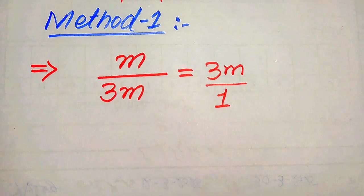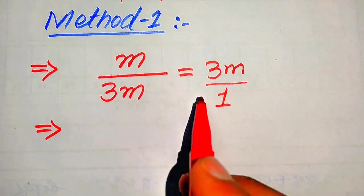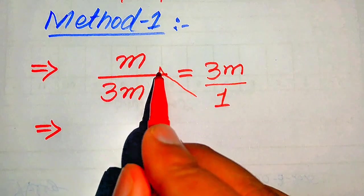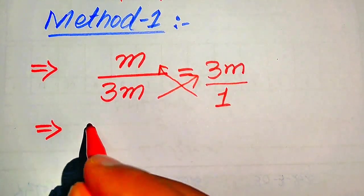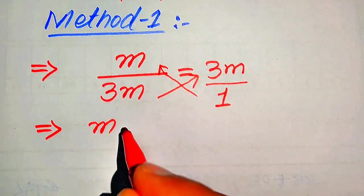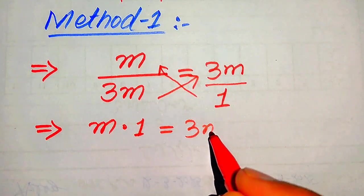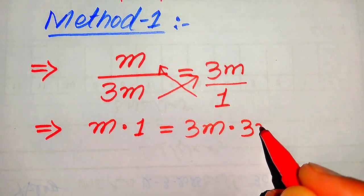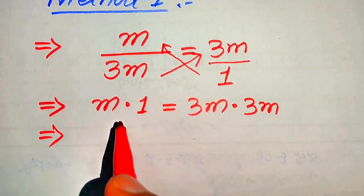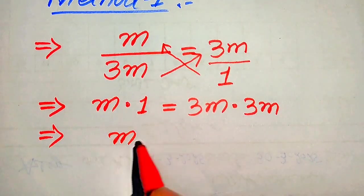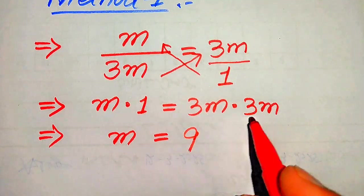Now we need to cross multiply the terms. When we cross multiply, we multiply one with m and we multiply three m with three m. This gives us m times one equals three m multiplied by three m. In the next step, m times one is equals to m, and three times three becomes nine, and m times m is m squared.